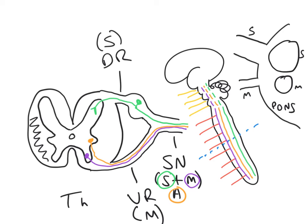We can draw the cell body of a motor neuron in the motor nucleus of the trigeminal nerve and show its axon going out through the small motor component off to the muscles of mastication. And we can show a sensory neuron sending its axon into the sensory nucleus of the trigeminal nerve. This is a really important basic concept: the understanding that the cranial nerves are simply very sophisticated, specialised spinal nerves.